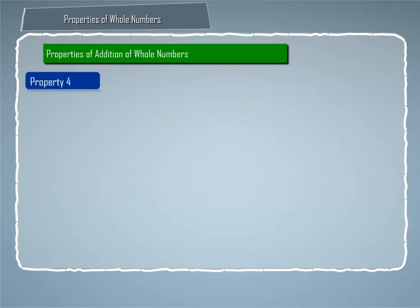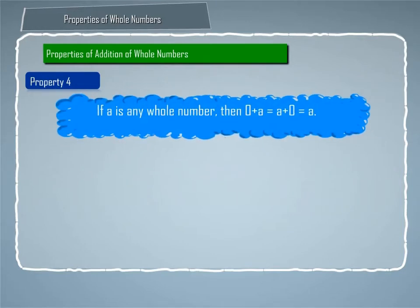Property 4: If A is any whole number, then 0 plus A is equal to A plus 0 is equal to A. This is known as property of 0 for addition of whole numbers and 0 is called additive identity.